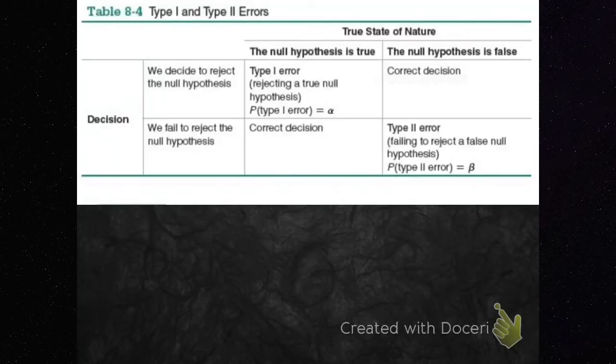We're talking about Type 1 and Type 2 errors. Type 1 error is when the null is true but you reject it. Type 2 error is when the null is false but you accept it.